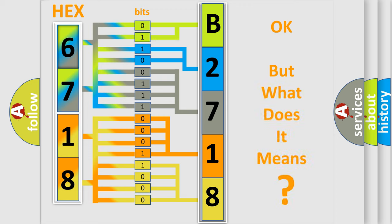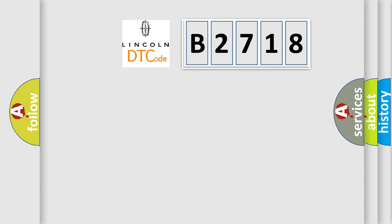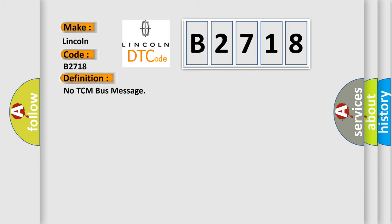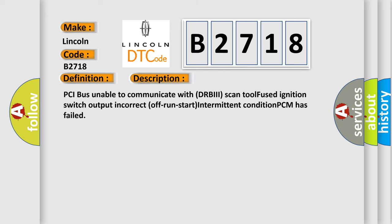The number itself does not make sense to us if we cannot assign information about what it actually expresses. So, what does the Diagnostic Trouble Code B2718 interpret specifically for Lincoln car manufacturers? The basic definition is: No TCM bus message. A short description of this DTC code includes: PCI bus unable to communicate with DRBII scan tool, fused ignition switch output, incorrect off-run start, intermittent condition, and PCM has failed.